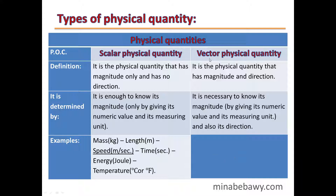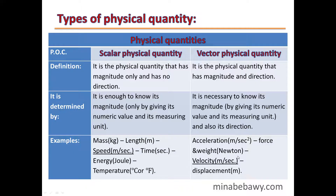Examples of vector physical quantities: acceleration, measured in meter per second squared; force and weight, both measured in Newton; velocity, measured in meter per second; displacement, measured in meter. All these quantities are vector physical quantities because to be defined, we must know their magnitudes and direction as well.